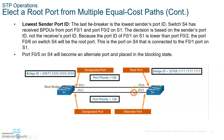This port is blocked because it's the alternate. The root bridge ports will always be designated regardless. So these two communicate with each other, and that port remains the designated port.